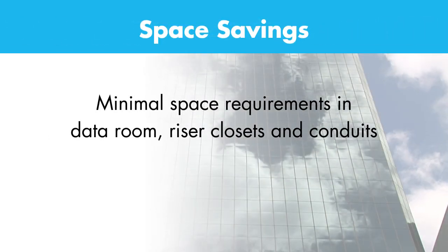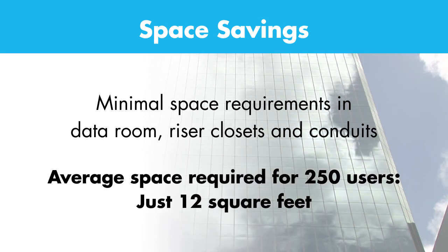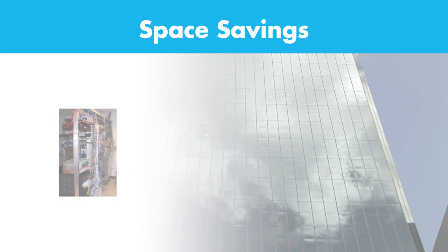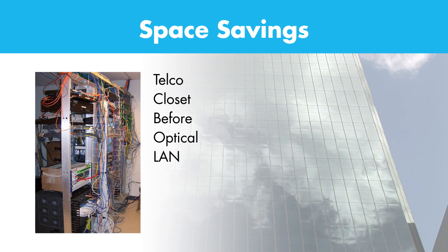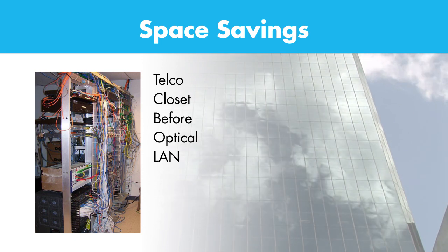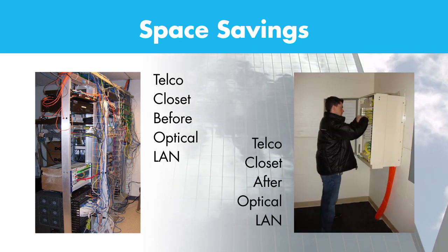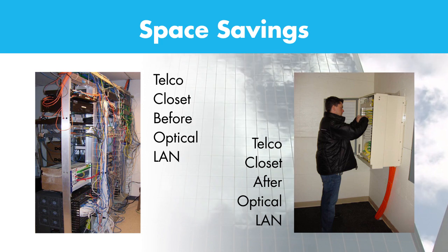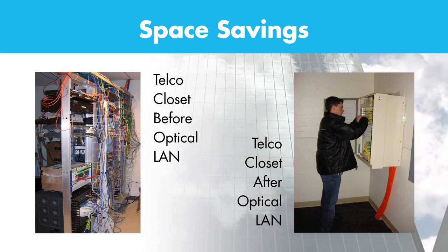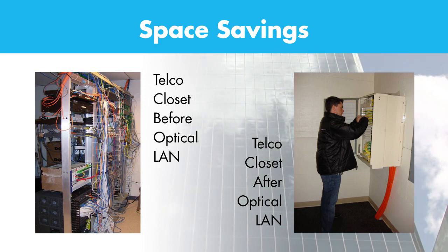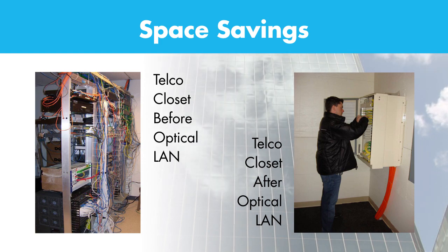A second advantage is space savings. Optical LAN eliminates active workgroup switches in IDF telco closets. Traditional connectivity, switches, powering and UPS backup are all replaced with a single passive fiber distribution hub. The average space required for 250 users is just 12 square feet.